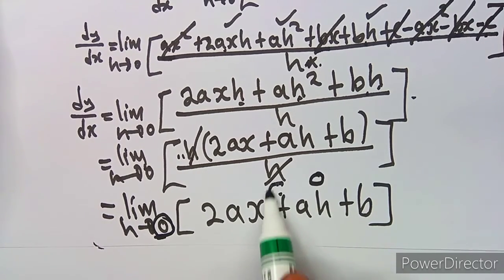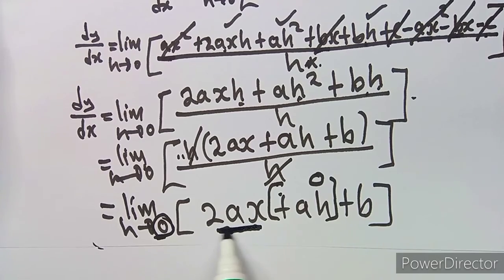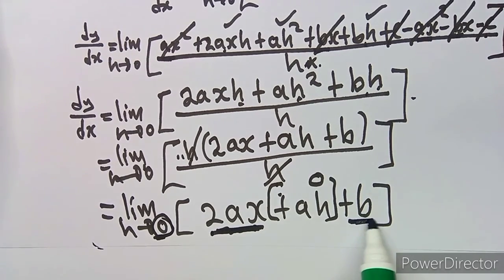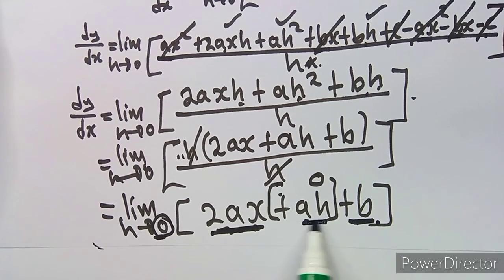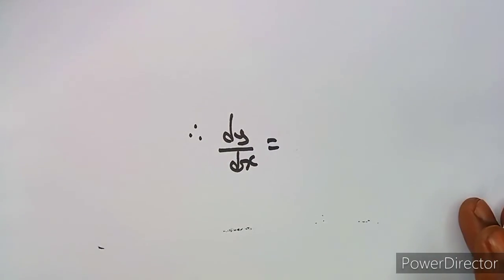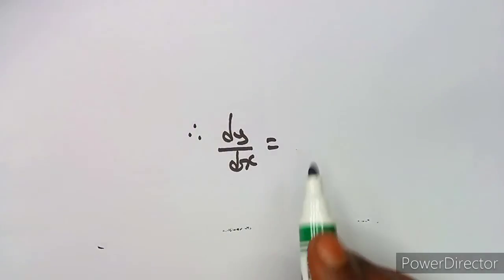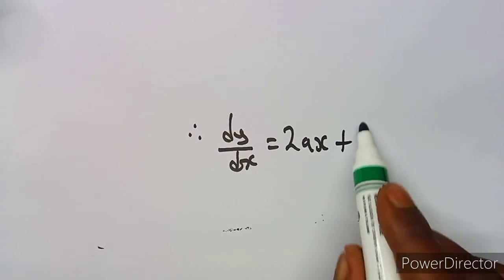Now we can apply the condition that H approaches zero. The term aH becomes a times zero, which equals zero. The terms 2ax and b have no H, so they remain unchanged. Therefore dy/dx equals 2ax + b.